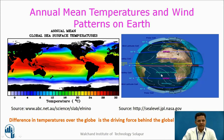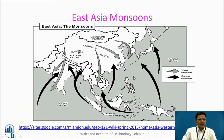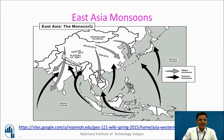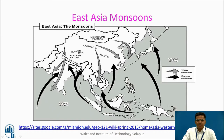We see here the global wind pattern which we have studied in geography. This figure tells us about the East Asia monsoon. In the East Asia monsoon, shown by these black arrows, we find the summer monsoon. Shown by these grey arrows, it is a winter monsoon.